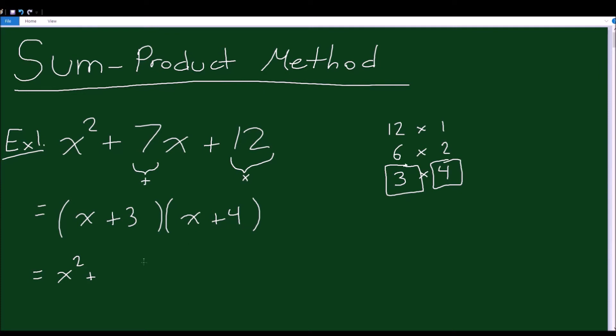Well, x times 4 is 4x, 3 times x is 3x. And then what's 3 times 4? 3 times 4 is 12. So remember I said what two numbers multiply to 12? Well, that's important because when we do this expansion, 3 times 4 will give you 12.